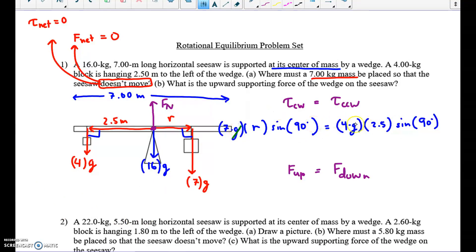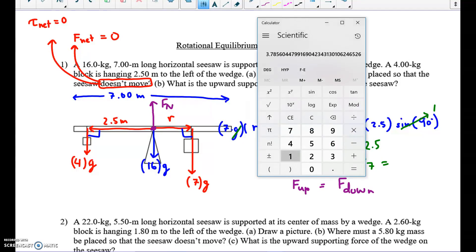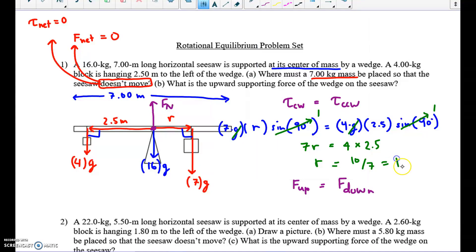We can actually do some fancy work and cancel out the g's. We divide both sides by g. Sine of 90 is just 1, so I'm going to make that, this is just 1. This is just 1. And what I have now is 7R equals 4 times 2.5. Well, 2.5 times 4, that's going to be 10. And R is going to be, let's move this down. R is going to be 10 over 7. We have to always calculate the decimal value. That's 1.43 meters. Part A is done. Where do we put this thing, the 7 kilograms? We put it 1.43 meters to the right of the wedge.